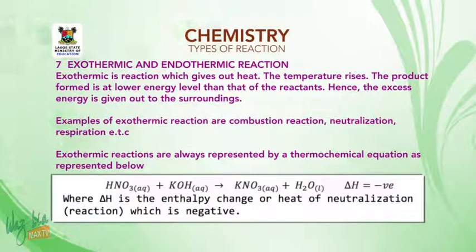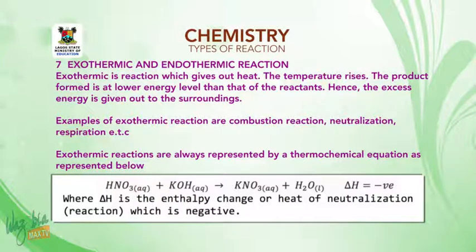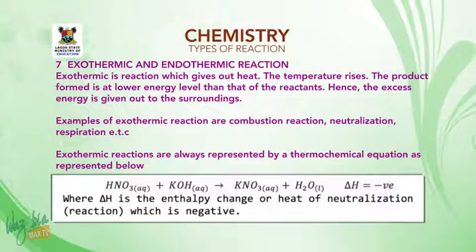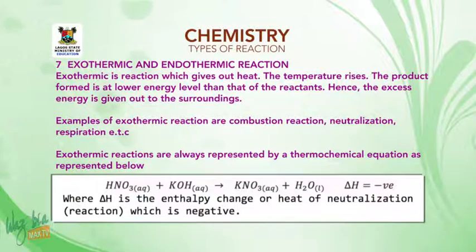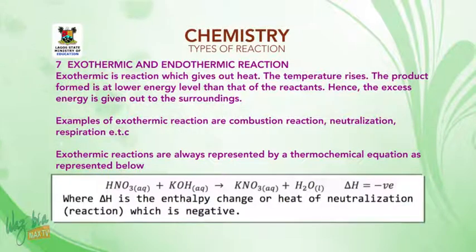Exothermic and endothermic reaction. Exothermic is a reaction which gives out heat — the temperature rises, and the products are at a lower energy level than the reactants, so excess energy is given out to the surroundings. Examples of exothermic reactions include combustion, neutralization, and respiration. Exothermic reactions are represented by a thermochemical equation with a negative ΔH. For example: HNO₃ + KOH → potassium nitrate + water, ΔH negative — where ΔH is the enthalpy or heat of neutralization.